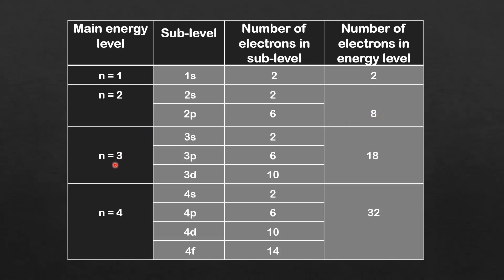Moving on to energy level 3, we have a 3s, a 3p, and a 3d sublevel. The 3s sublevel can hold 2 electrons, the 3p sublevel can hold 6, and the 3d sublevel can hold 10, making a total of 18 electrons in the N equals 3 energy level.